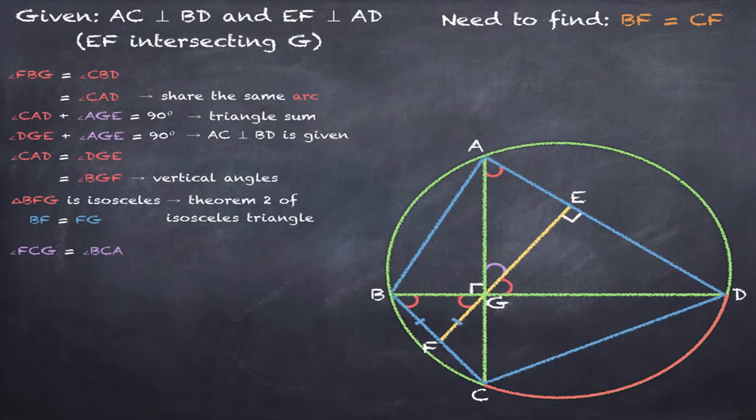Next let's look at angle FCG which equals angle BCA. This also equals angle BDA because they share the same arc. Angle BDA plus angle DGE equal 90 degrees because of the triangle sum.